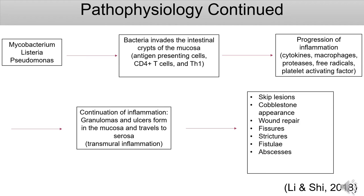Inflammation will progress, allowing for substances and other immune cells to be released, such as cytokines, macrophages, proteases, free radicals, and platelet-activating factors. As inflammation occurs, granulomas will be present in all layers of the intestinal wall, from the mucosa to the serosa. Granulomas are collections of immune cells that have attacked the bacteria. Eventually, ulcers will form within all layers — this is considered transmural inflammation. As a result of the uncontrolled inflammation, skip lesions and cobblestoning are apparent. There will also be wound repair, allowing for scars to develop. Extra-intestinal complications arise, such as fissures, strictures, fistulas, and abscesses.